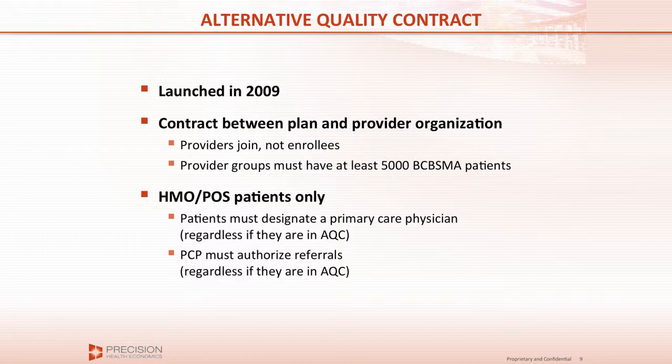Every provider group participating applies only to their HMO and point-of-service patients, because you want the primary care physician to serve as the referring physician to authorize referrals. But once you're in the Alternative Quality Contract as a patient, you can go to any provider in Massachusetts — it's just that the provider group would be held financially liable for care delivered outside of network. So patients are not restricted in their choice in any way.